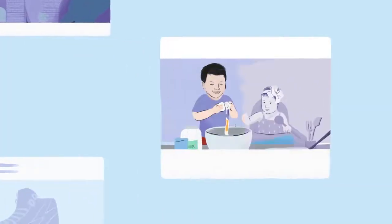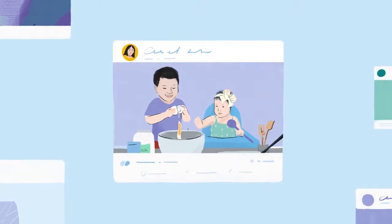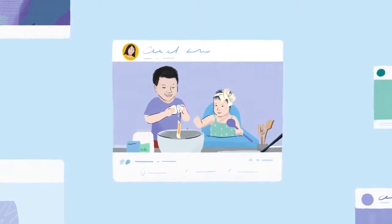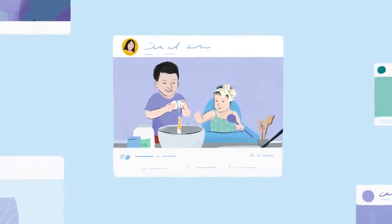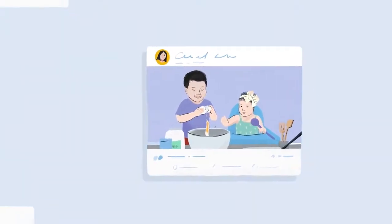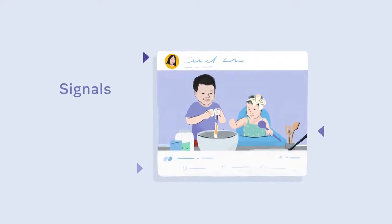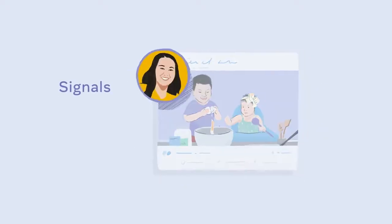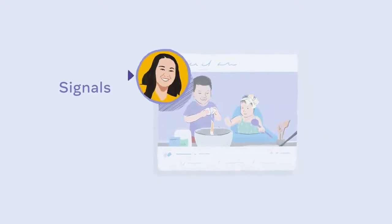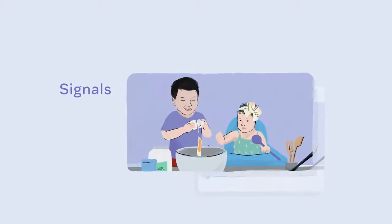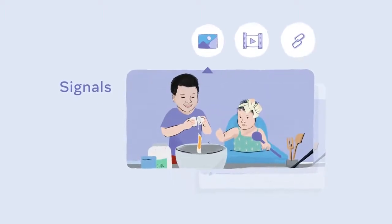Say there's a post in my inventory from my sister that has a photo of her two kids making breakfast. For this post, the algorithm will then gather what we call signals, like who posted it, how I've interacted with that person in the past, and whether it's a photo, video, or link.